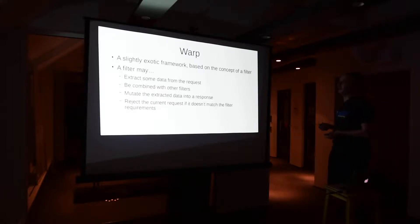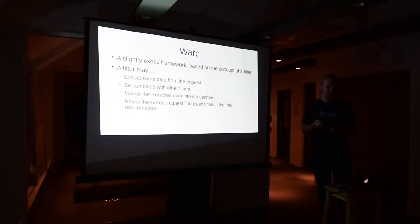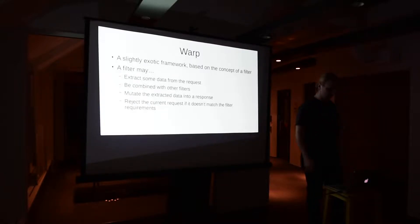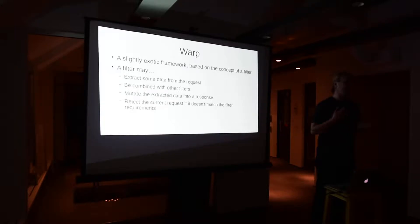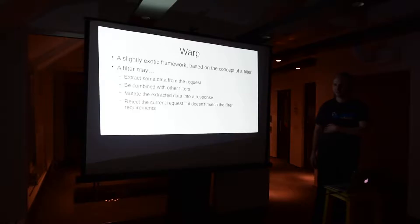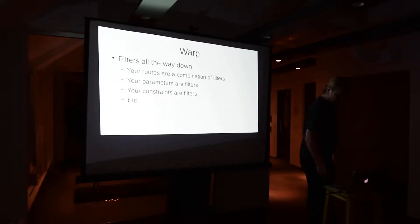For instance, you can extract some data from the request, putting it into the request context. You can combine filters with other filters. And you can turn the request context into a response. Significantly, if your filter doesn't like the request, you can reject it and send it back up the filter graph for something else to look at. It's filters all the way down — your routes are a combination of filters, parameters, and constraints.